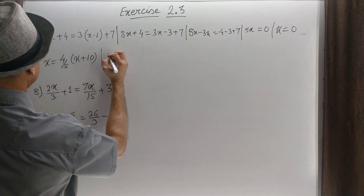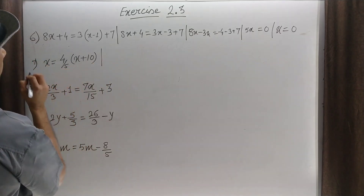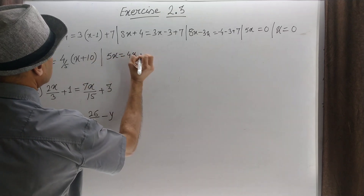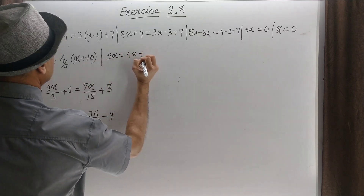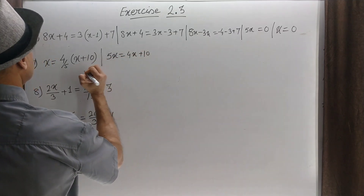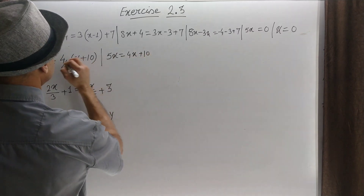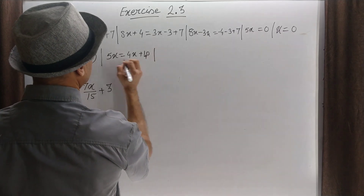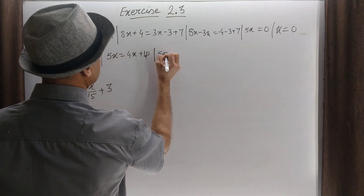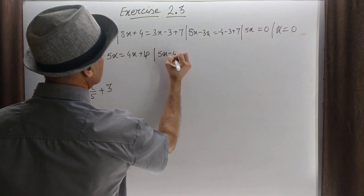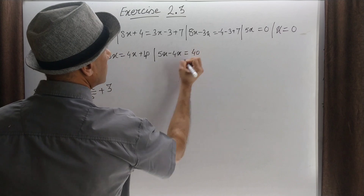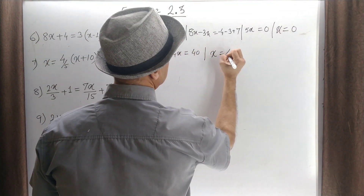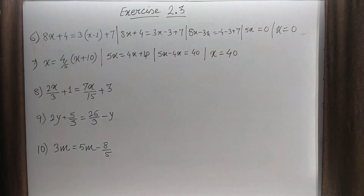This can be written as: we cross multiply by 5. So 5x is equal to 4x plus 10, and 10 into 4 is 40. So 5x minus 4x is equal to 40. Therefore x is equal to 40. Clear?